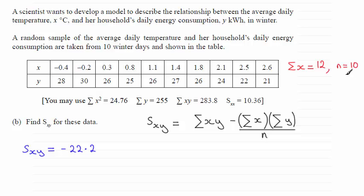So it's just a question then of substituting the summary statistics and Sigma X equaling 12 into this formula here. And if you do that, then you will find you'll get minus 22.2.